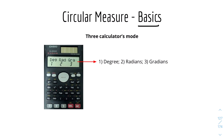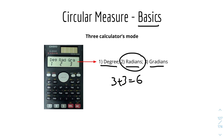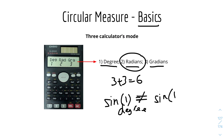There are actually three calculator modes: degree, radians, and gradians. The one we're typically going to use for circular measure is radians. It doesn't really matter for basic operations like 3 plus 3 — it'll still be 6. But what matters is that when you use a trigonometric function like sine 1, the result in degree mode is not the same as sine 1 in radian mode.